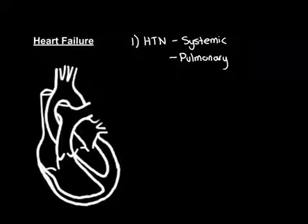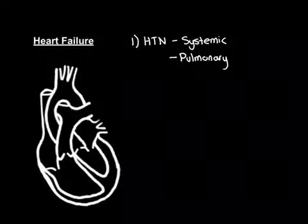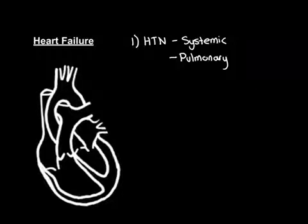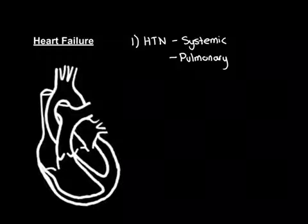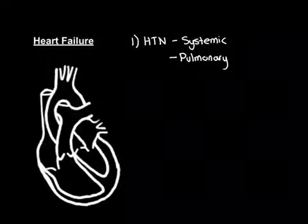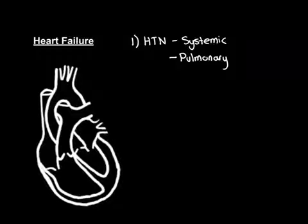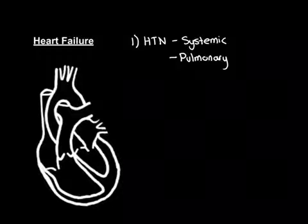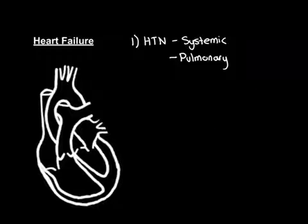Because hypertension happens very slowly, the heart often just gets used to it as it goes on. It can lead to a cardiomyopathy, which we'll discuss in cause number three. But in itself, it doesn't usually cause heart failure without first leading to the cardiomyopathy.